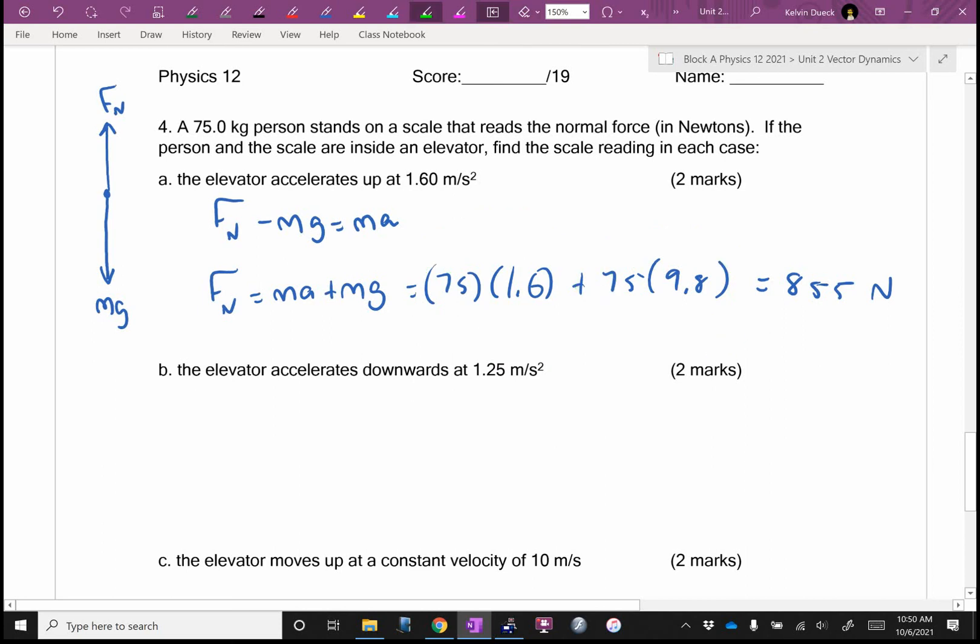Ooh, now we're accelerating down in part B. Who's winning? Mg. Who's losing? Normal force. What's that equal? MA. Swappy dance to get the normal force by itself. I'll get Mg minus MA, that equals the normal force. It's going to be M75, G9.8, minus M75, 1.25.